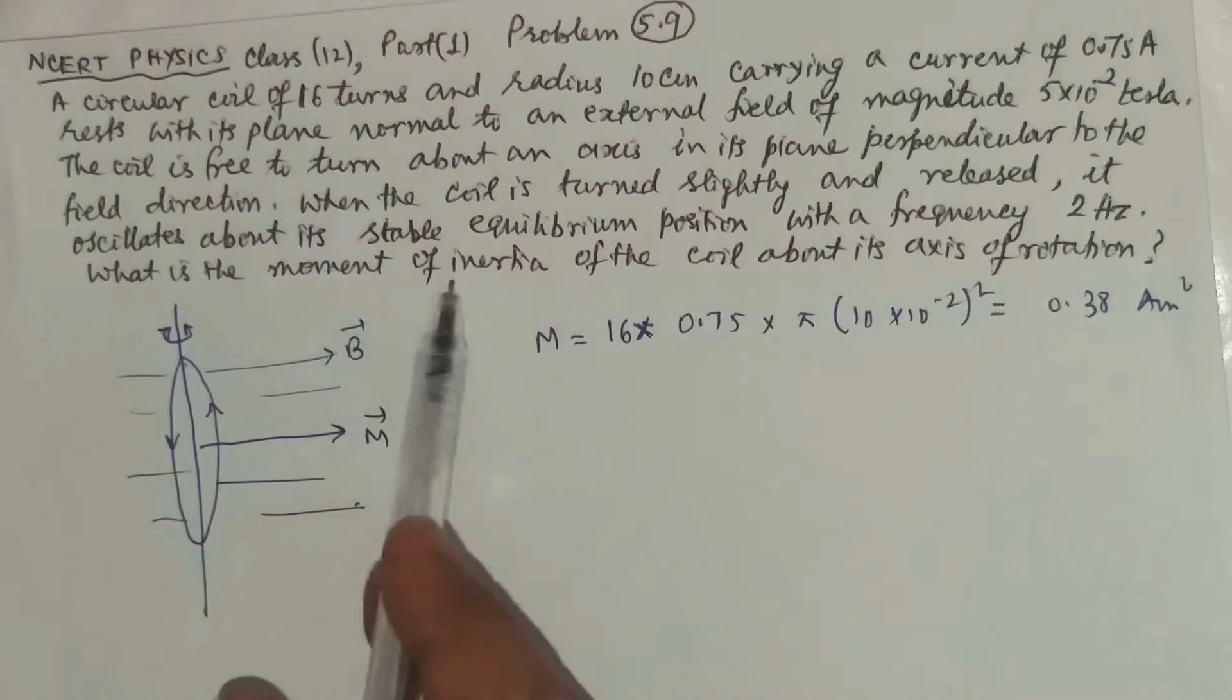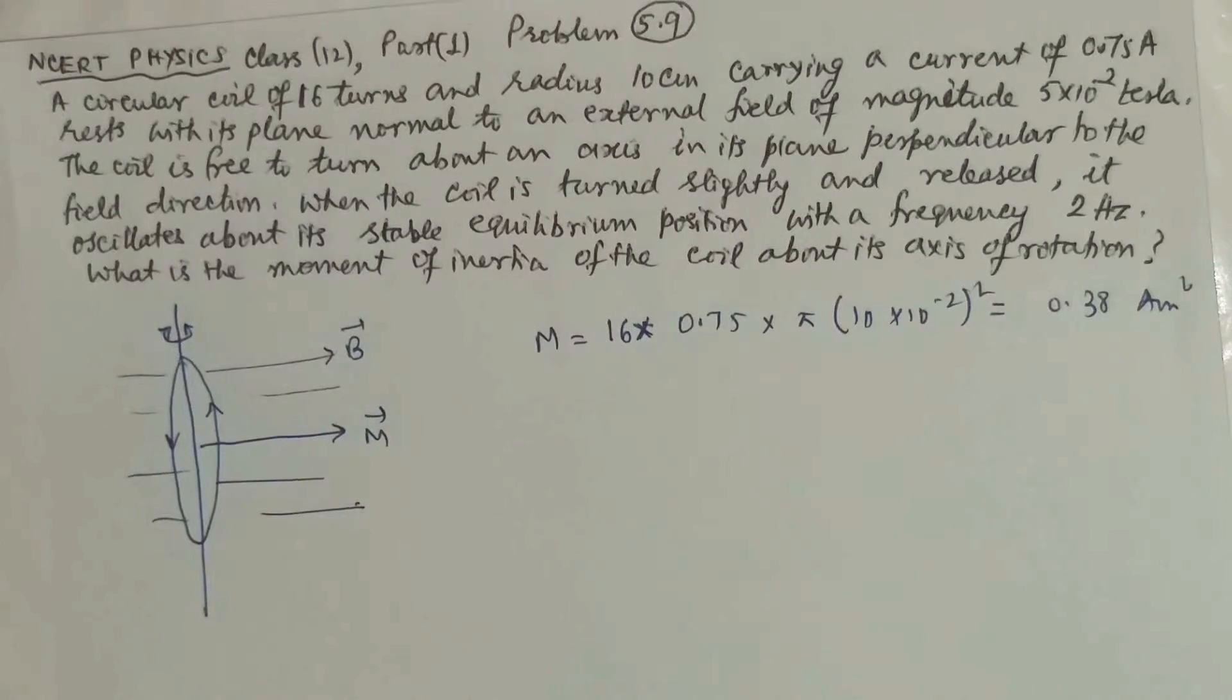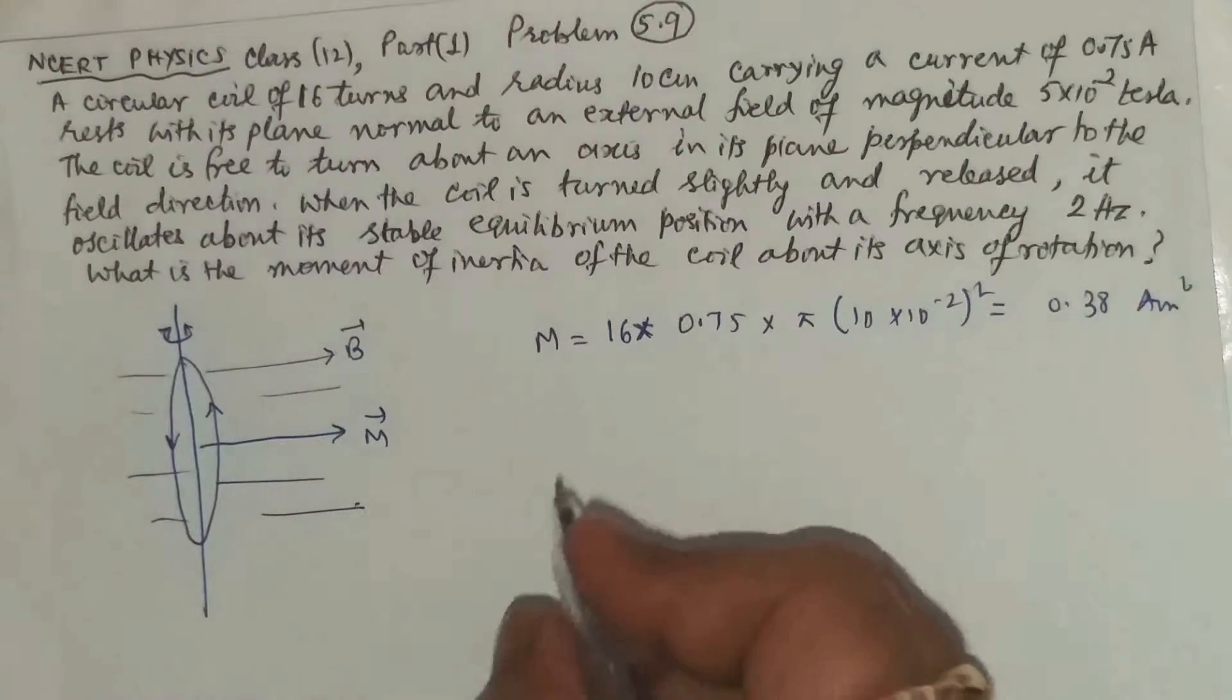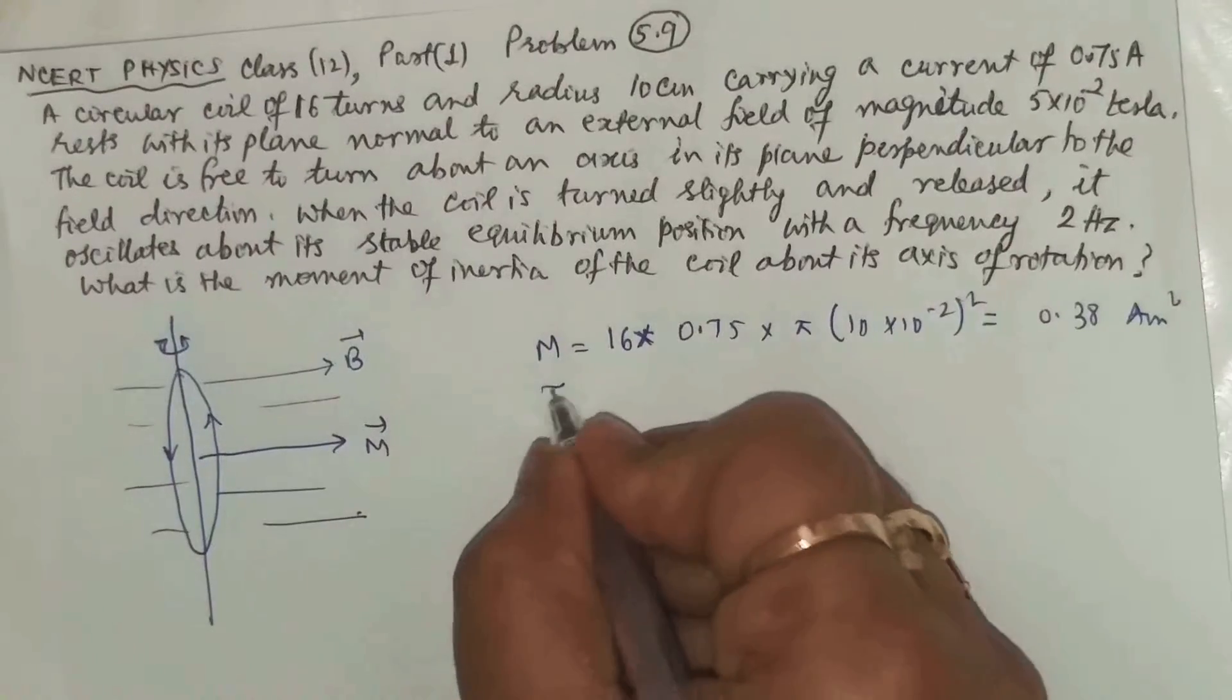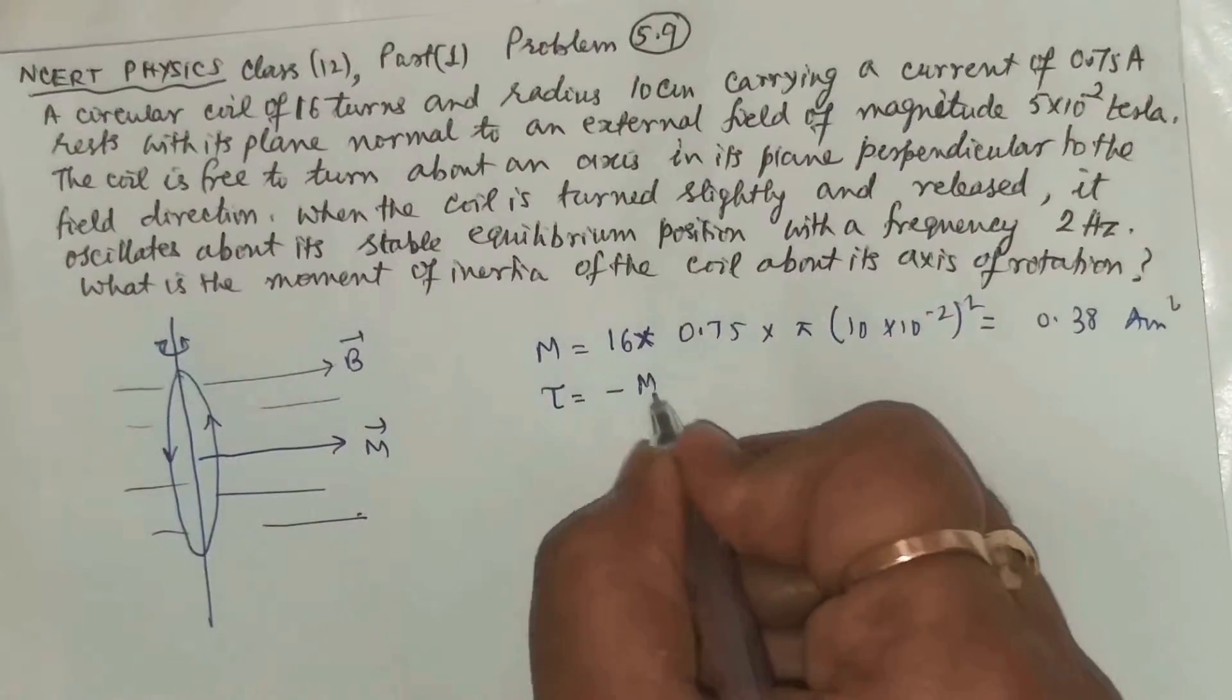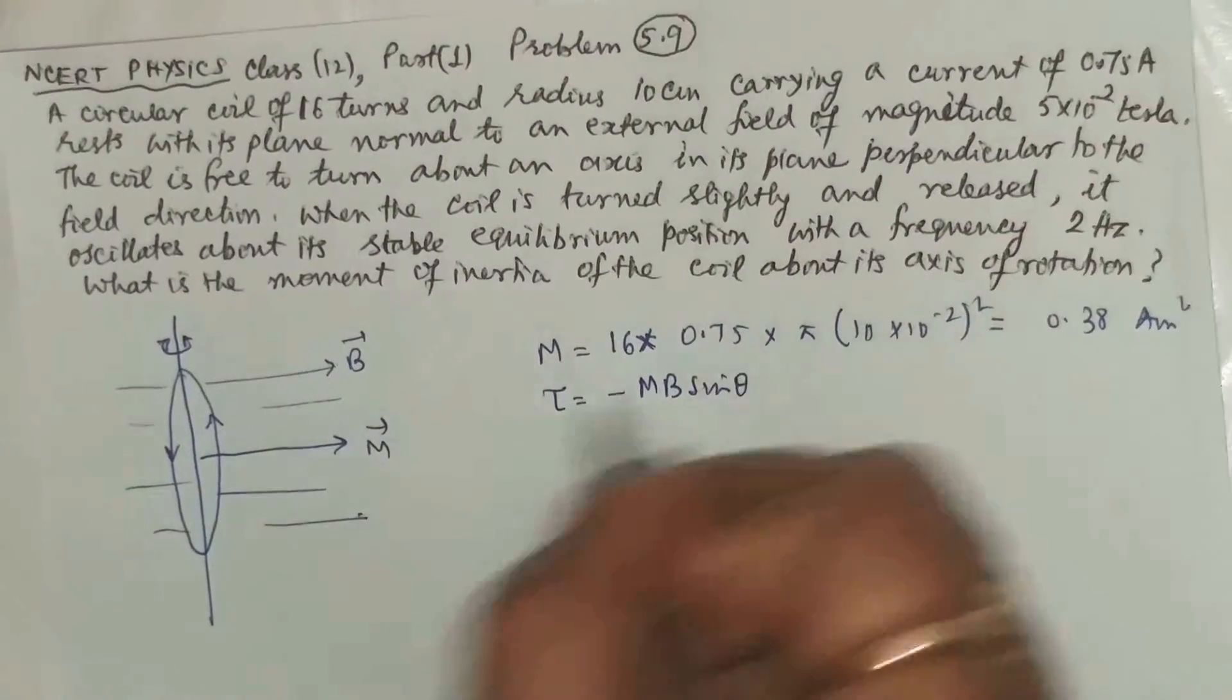Then what is the moment of inertia of the coil about its axis of rotation? If you turn slightly, then the unbalanced torque is equal to mb sin theta.